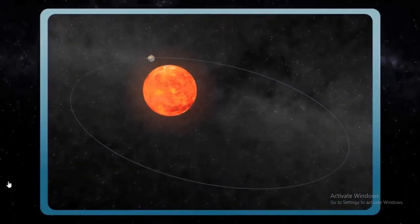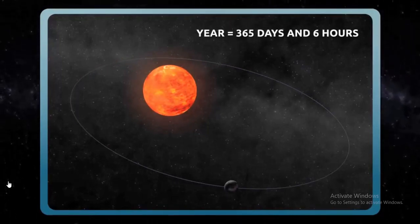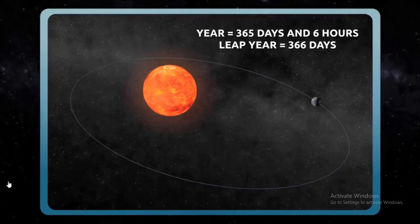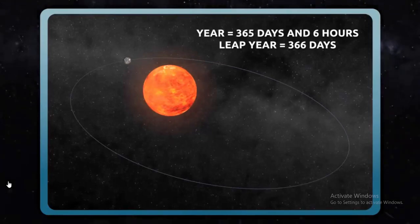The Earth travels in an orbital plane around the sun. This orbit, which was previously considered circular, was actually wrong — this orbit is elliptical in shape. Because of this axis, the Earth's shape is also an oblate spheroid. One year, which is one revolution, is completed in 365 days and 6 hours. After every 4 revolutions, there is a leap year — which is 366 days instead of 365. This extra day falls in February.